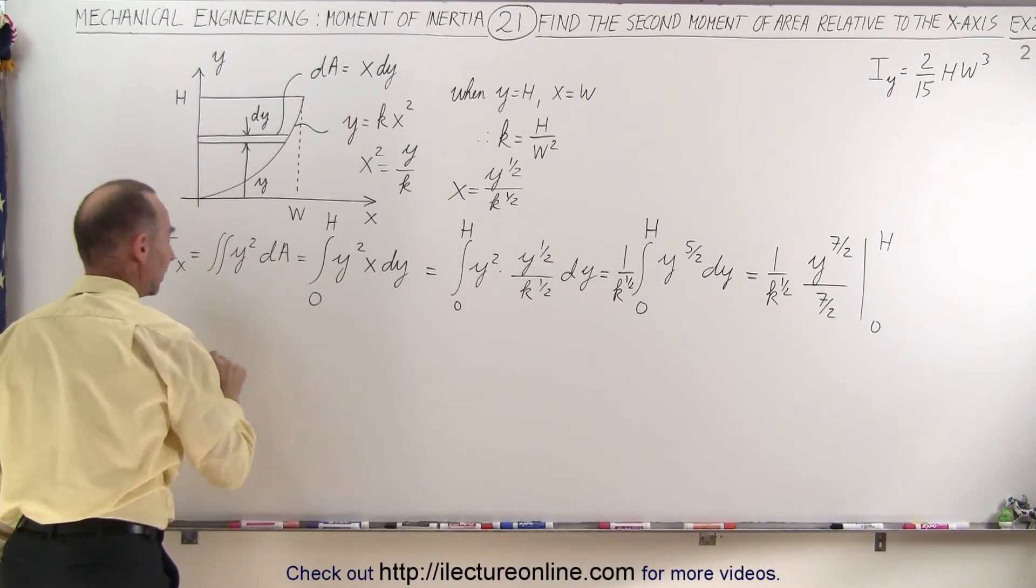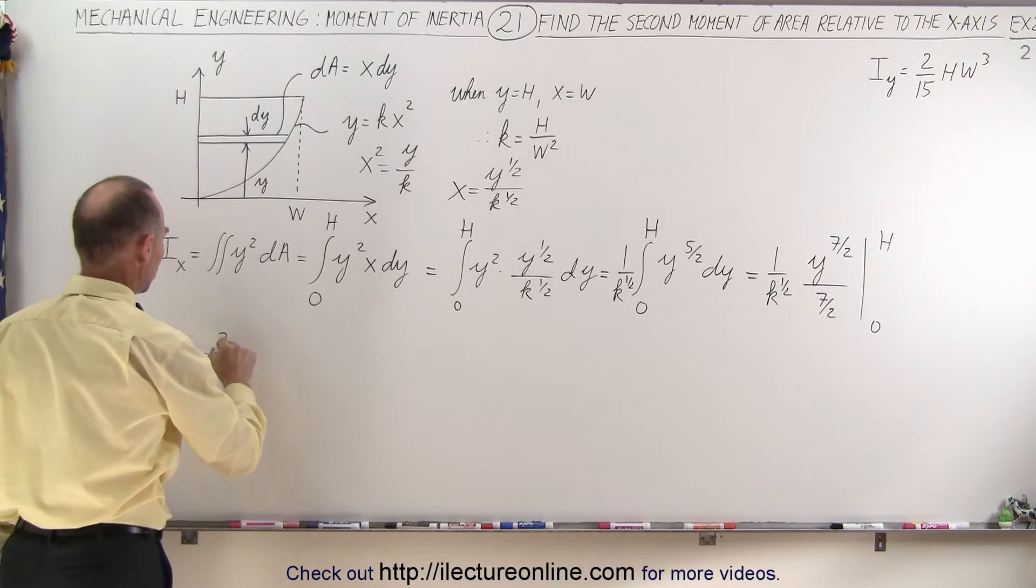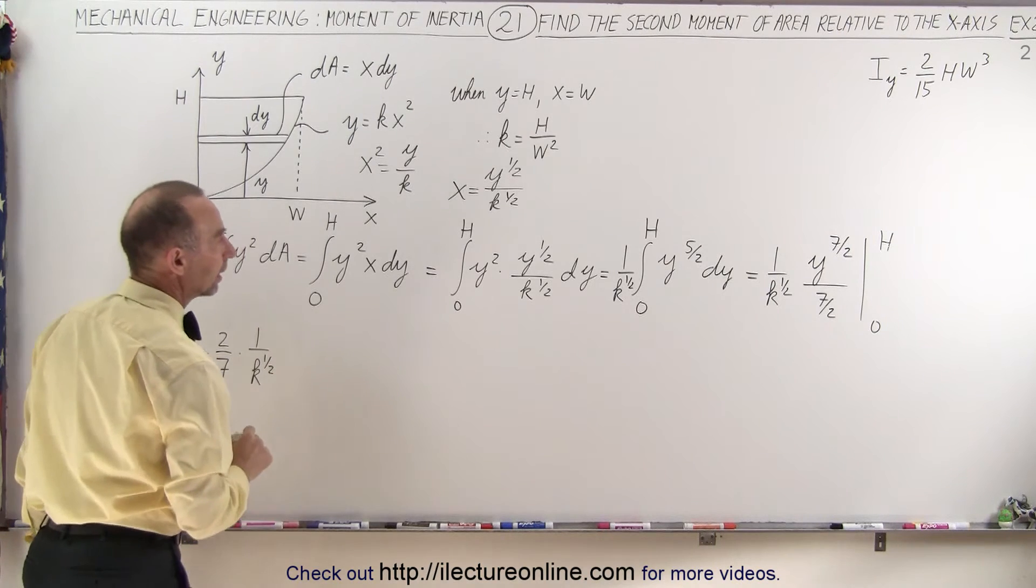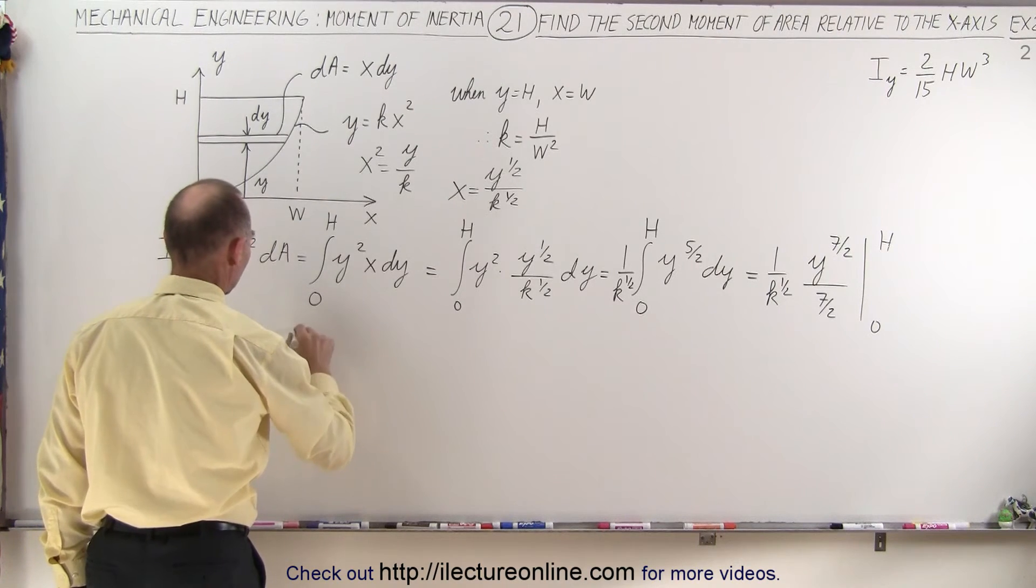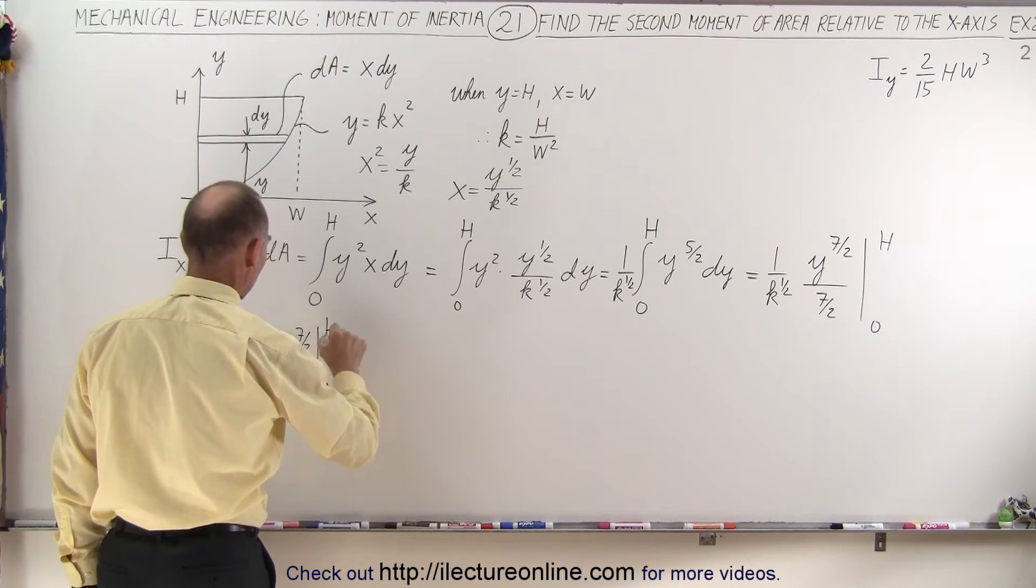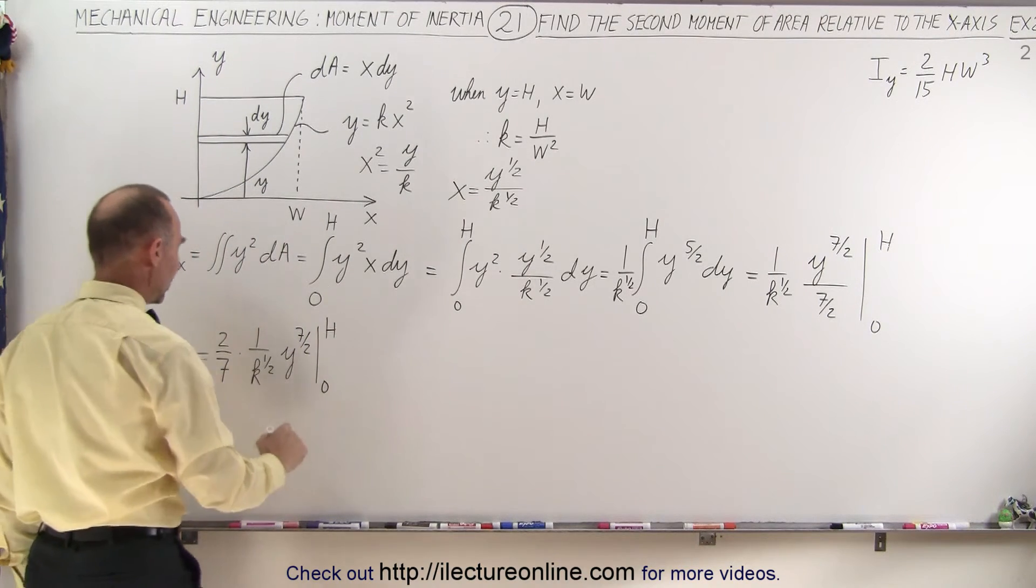This can then be written as 2 over 7 times 1 over k to the one-half power times y to the seven-half power, evaluated from 0 to h. And then we plug in the upper limit, we get the following, this is 2 over 7.